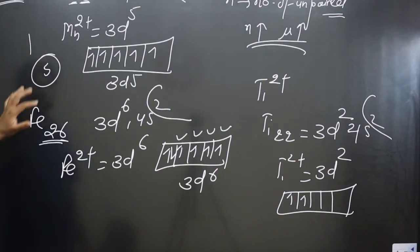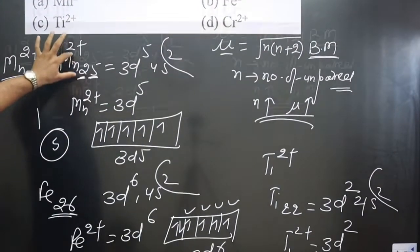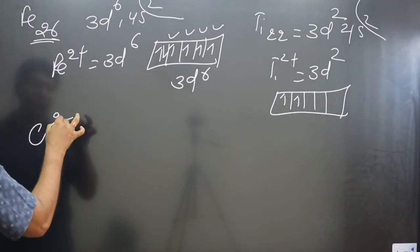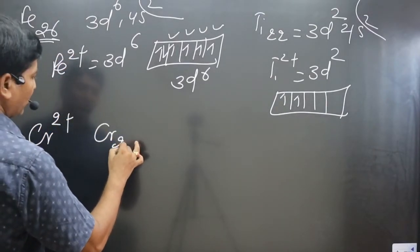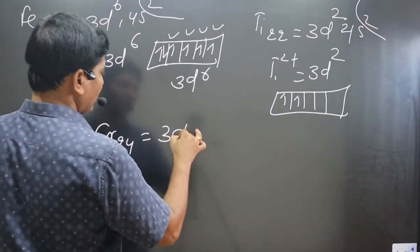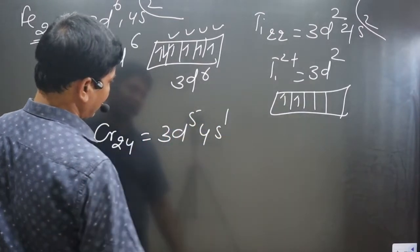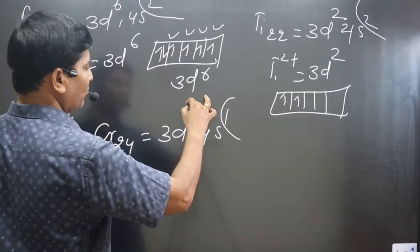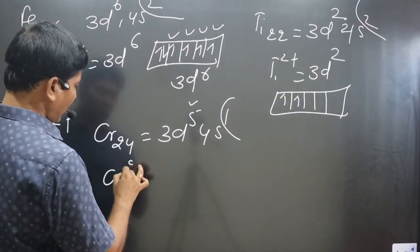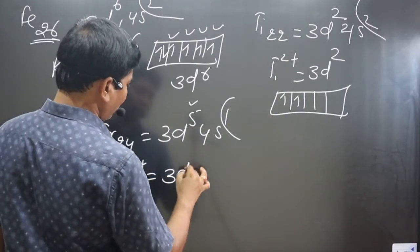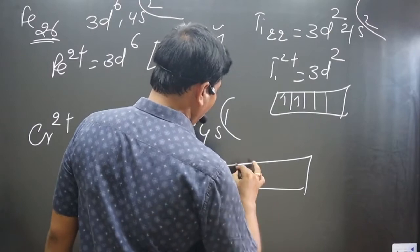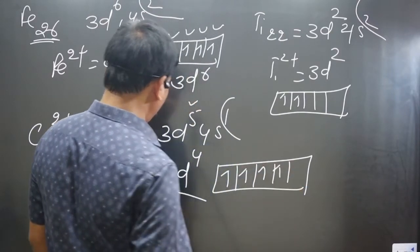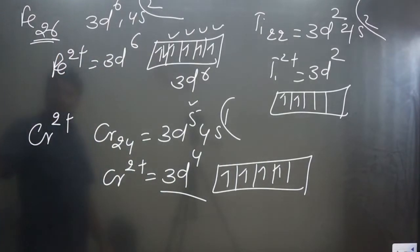Finally, Cr²⁺: chromium has atomic number 24 with electronic configuration 3d⁵ 4s¹. Since Cr²⁺ loses two electrons — one from 4s and one from 3d — we get 3d⁴. Writing the orbital notation gives us four unpaired electrons, still fewer than Mn²⁺'s five.